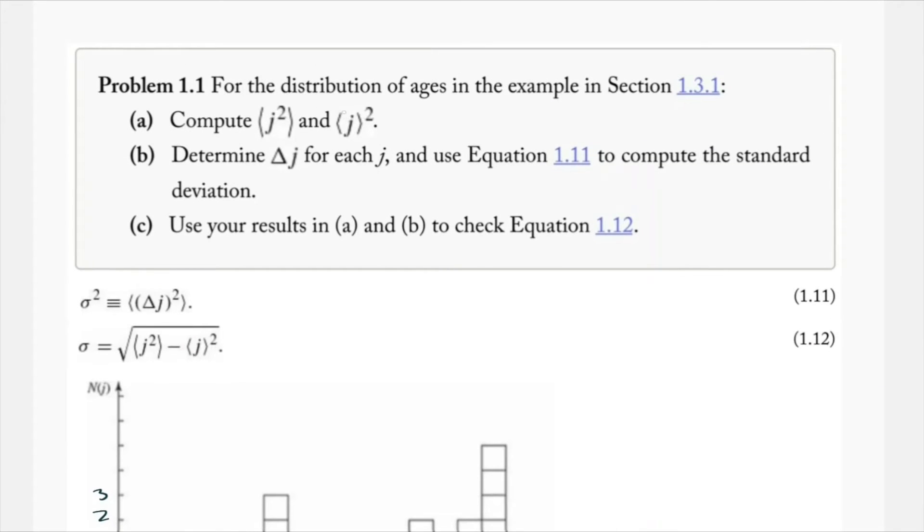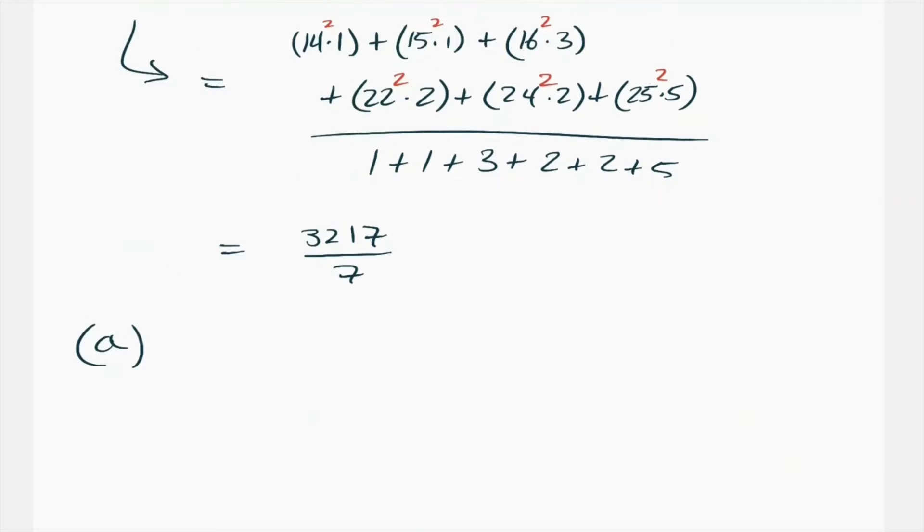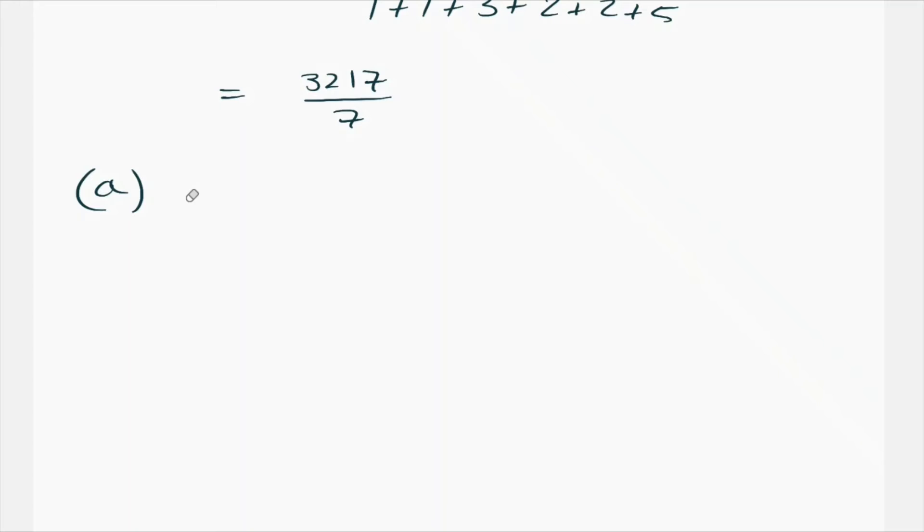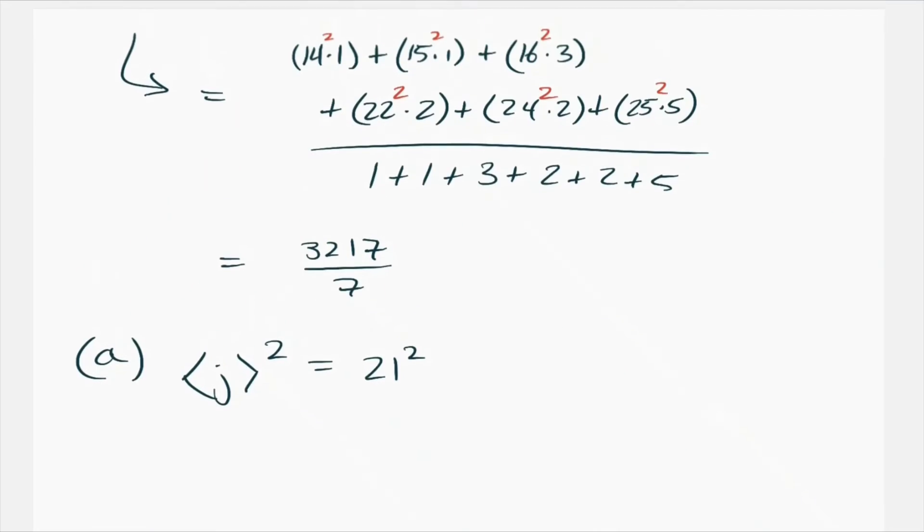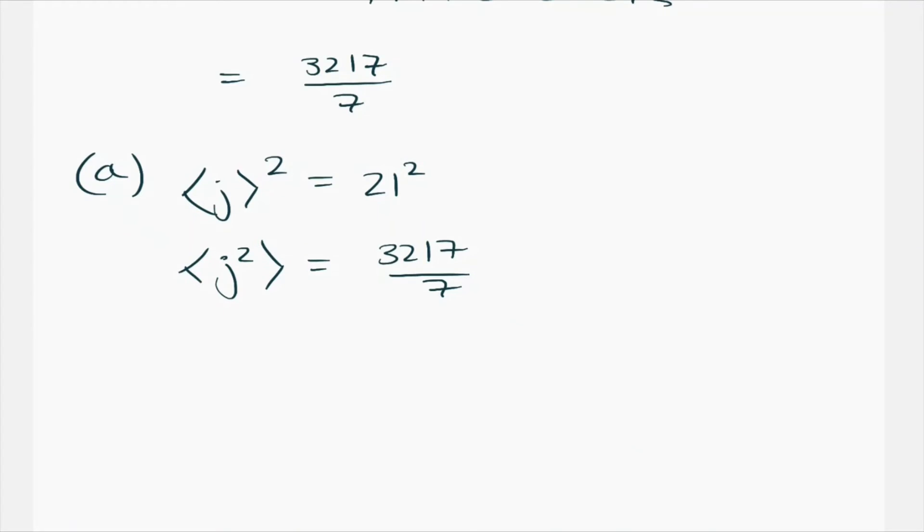You notice we weren't asked for the expectation value of j alone, we need to square that value. So when we go down here for our final answer to part A, our final answer is going to be: expectation value of j is 21, so expectation value of j squared equals 21 squared. Now, for the second part to that problem, where we do the expectation value of j squared itself, that is just the quantity we just found, 3217 over 7. Notice that those two are not the same thing. Those two are very different quantities.